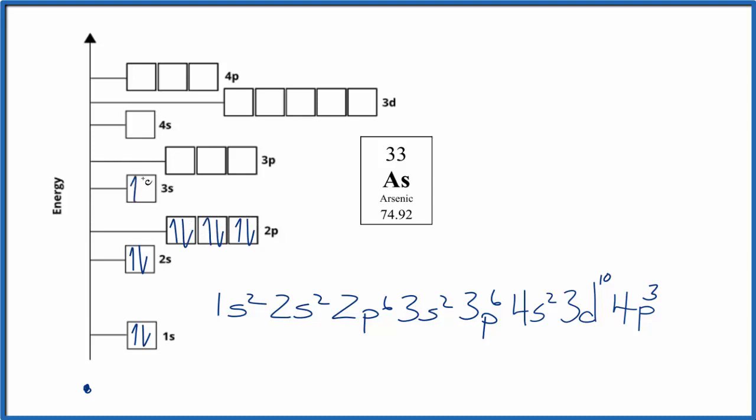We have 3s2, then 3p6, 4s2, and then we get to 3d10. We spread them out again and then pair them up. For the 4p3, we spread them out, and that's the atomic orbital diagram for arsenic.